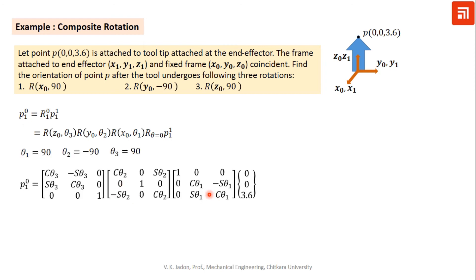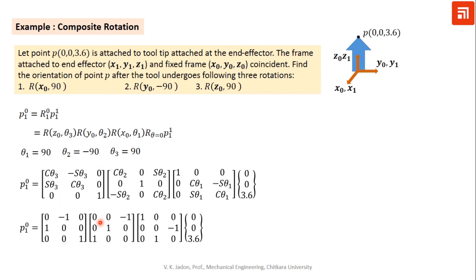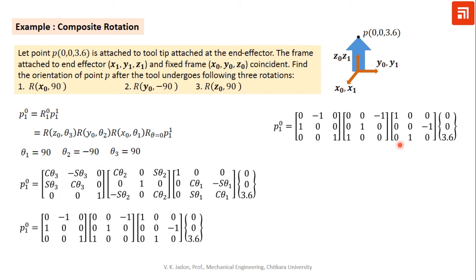We get these three rotation matrices. The first one is the rotation matrix about the x-axis, then the y-axis, then the z-axis. Substituting the values of +90, -90, and +90 degrees and multiplying, we get the final composite rotation matrix R10.